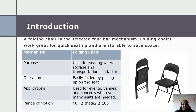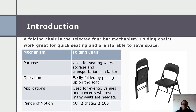Introduction. A folding chair is the selected four-bar mechanism. Folding chairs work great for quick seating and are storable to save space. The purpose of a folding chair is used for seating where storage and transportation is a factor. Operation is easily folded by pulling up on the seat. Application is used for events such as concerts wherever many seats are needed. Range of motion goes from 60 degrees to 180.